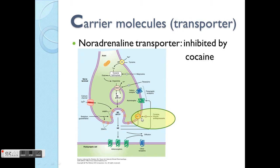The NET — the norepinephrine transporter — is the target we're discussing here. Its function is like a mini recycling process, and it also limits the effect of NE. What it does is bring NE back into neuron A, so the time NE is available in the cleft is much shorter.